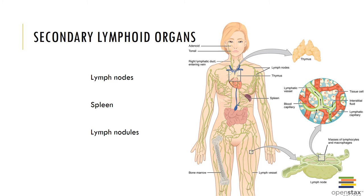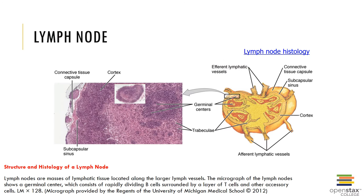There are also secondary lymphatic organs. These are specialized forms of connective tissue called reticular connective tissue, which resembles areolar tissue but contains larger numbers of collagen, elastin, and reticular fibers. The secondary lymphoid organs consist of the lymph nodes, spleen, and lymph nodules. The lymph nodes are small lymphoid organs ranging in diameter from one millimeter to 25 millimeters, and the shape of a typical lymph node resembles that of a kidney bean. The largest collections of lymph nodes are located in the cervical, axillary, and inguinal regions of the body.